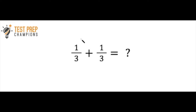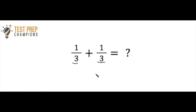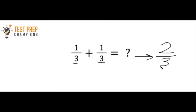In this question, the first thing we have to see is that we have a common denominator. In fractions, the top number — which in this case is one — is called the numerator, and the bottom number — which is three — is called the denominator. In order to add fractions, the denominators have to be the same. So all we do is one plus one equals two, and we keep the same denominator, which is three. The answer is two-thirds.